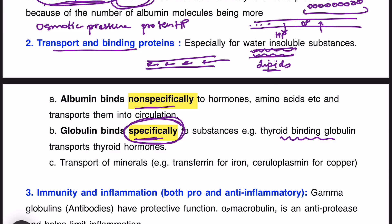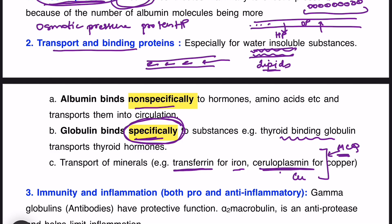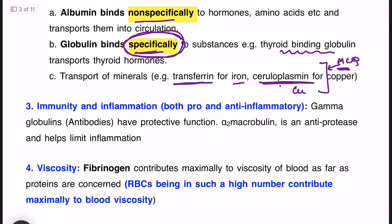There are other proteins which transport other substances. For example, transferrin — iron binds to transferrin for transport. Then there is ceruloplasmin, which binds with copper. These are important MCQ facts: transferrin binds with iron, ceruloplasmin binds with copper.